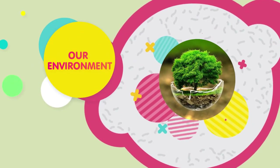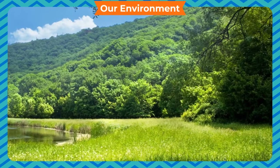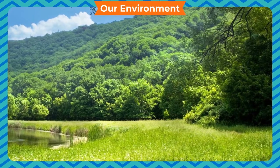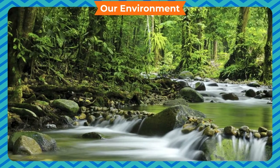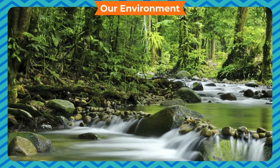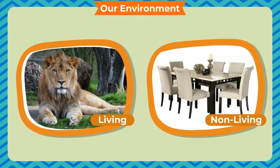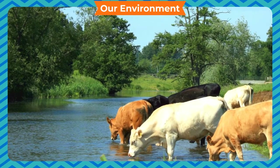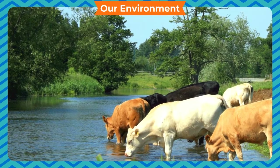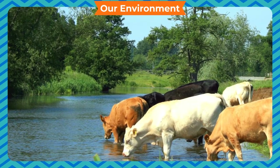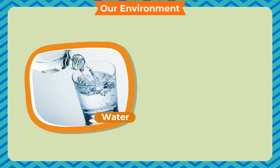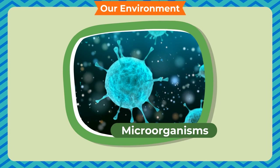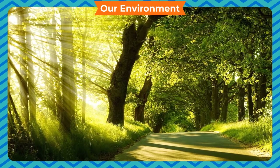Our environment — everything around us that makes up our surroundings — is called the environment. It includes all living and non-living things present around us. Most of the living and non-living things are interdependent on each other. Our environment includes the air we breathe, soil, water, plants, human beings, animals, microorganisms, etc.